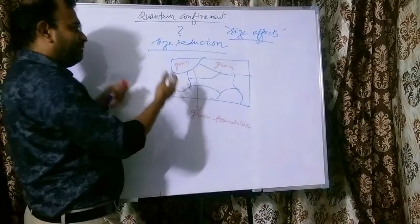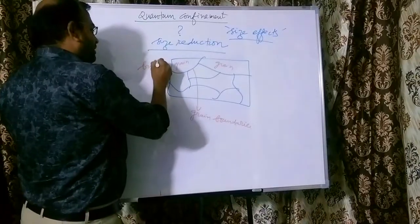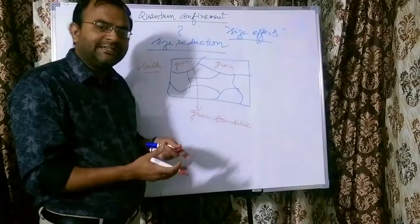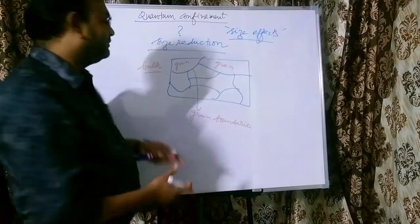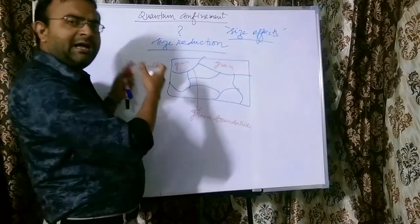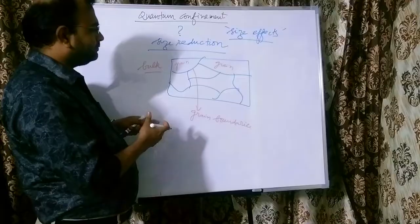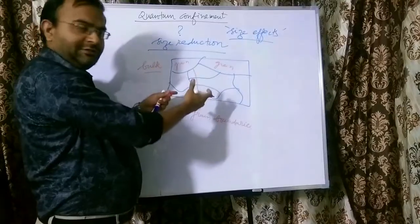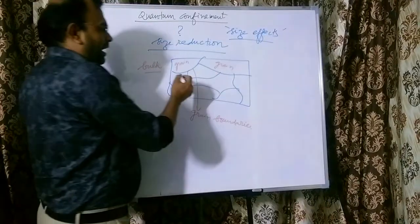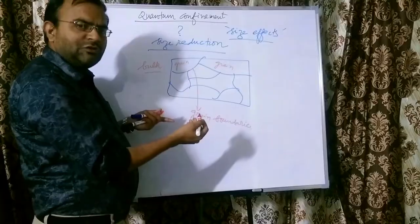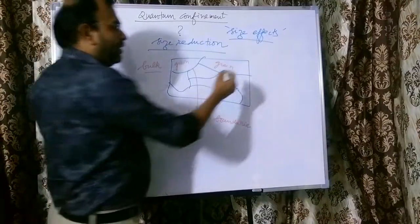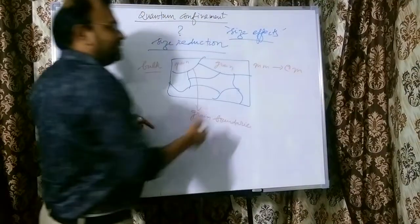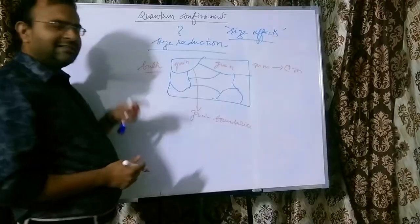When I say that this material is a bulk material, that means this is not a nanomaterial. We are contrasting here a bulk material and a nanomaterial. Any normal material is a bulk material, and the grain structure of the material is generally something like this. The size of the material is generally from a few millimeters to a few centimeters or larger than that. Such materials are generally termed as bulk materials.